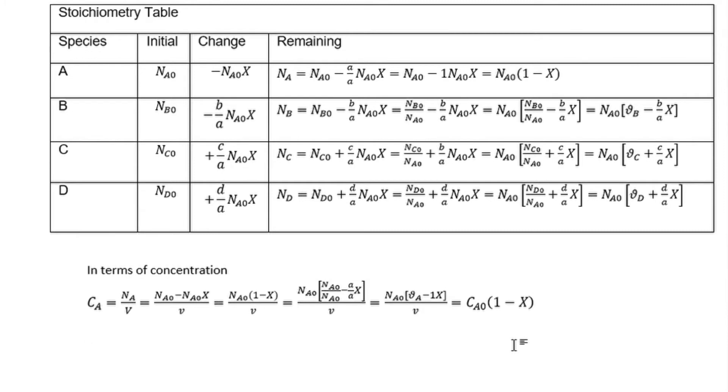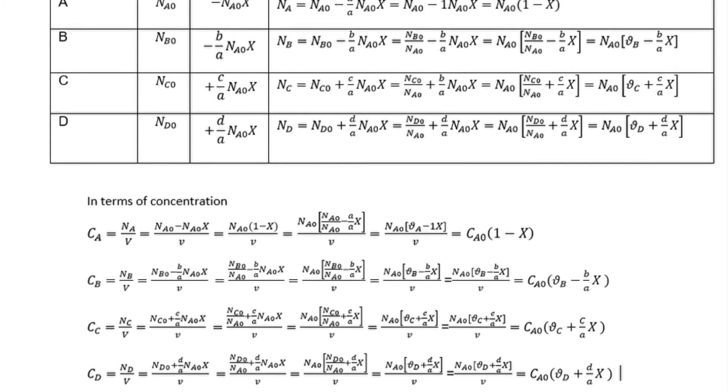Let's do the very same thing for reactant B, and products C and D. Since A is the limiting reagent, we expressed everything relative to A. Whatever we derived in the stoichiometric table, we represented it here by simply replacing the number of moles remaining over volume. Moles over volume is basically concentration, so I did the same thing for B, C, and D.